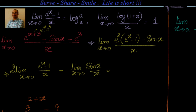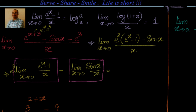We know that limit x tends to 0 of (e^x minus 1)/x equals 1, and similarly the second limit, sin x over x, is also equal to 1. So I can write it as e³ times (1 minus 1). So the answer will be e³ minus 1.